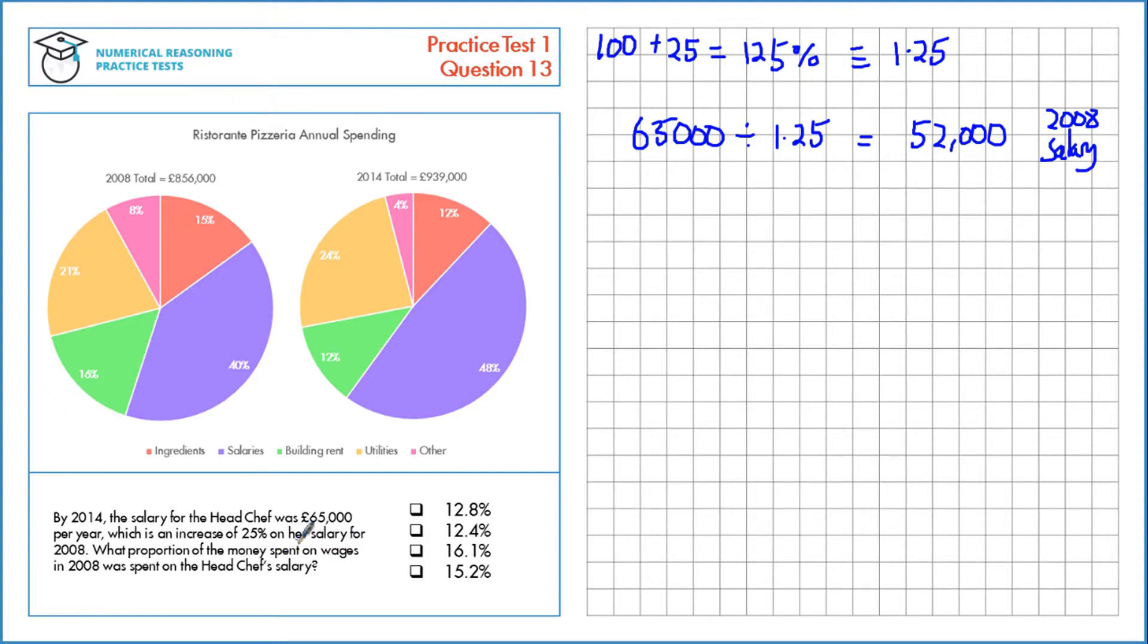It asks what proportion of the money spent on wages in 2008 was that, so we need to look at the salaries for 2008, that's this region here, looking at 40% or 0.40 of the total, £856,000, which is £342,400 per year.